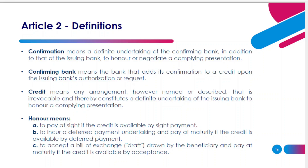Credit: the term credit means any arrangement, however named or described, that is irrevocable — that's the key term. It cannot be revoked, and thereby constitutes a definite undertaking of the issuing bank to honor a complying presentation. Why irrevocable? When we go to other articles, you'll see that an LC can only be revoked if the main three parties involved agree upon it; if they don't agree, you can't. So by its nature, it is defined as an irrevocable arrangement. In the context of UCP 600, when they talk about credit, they are referring to letter of credit.